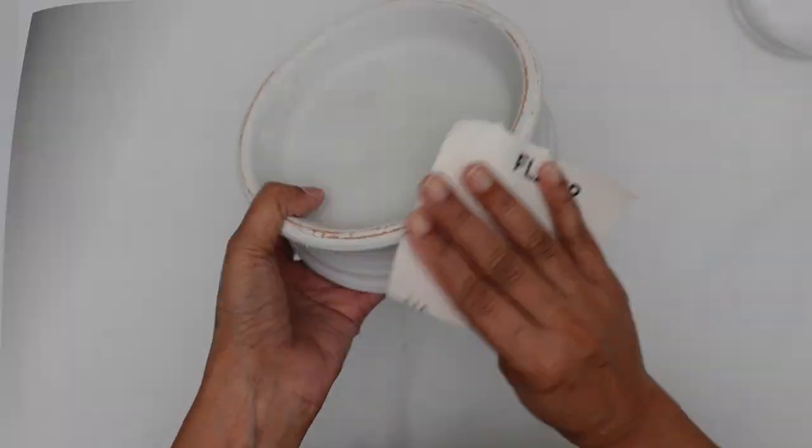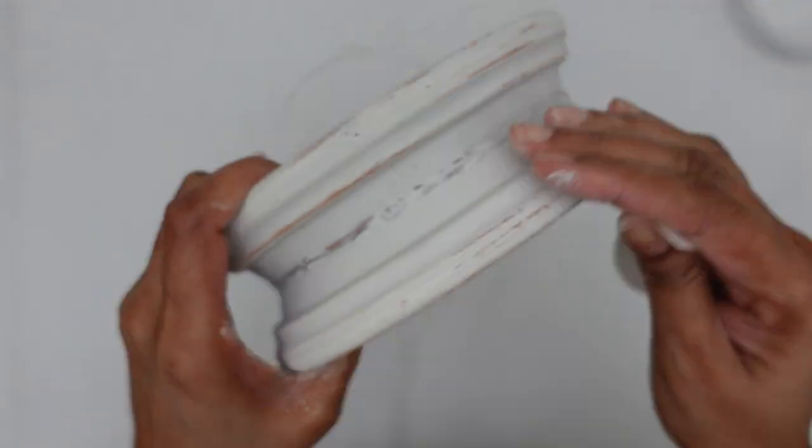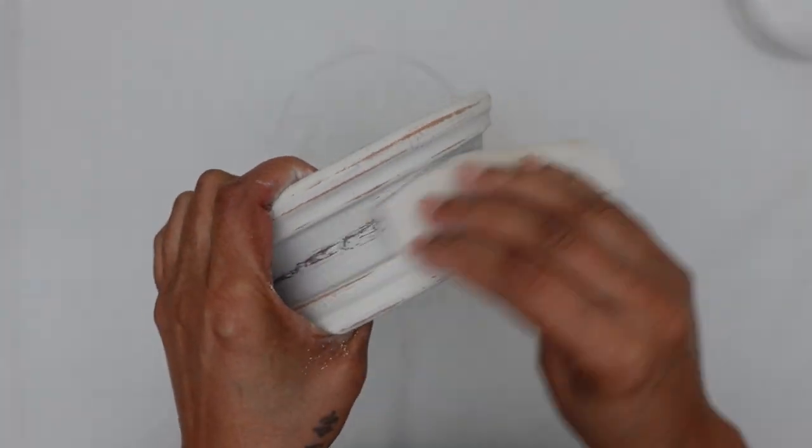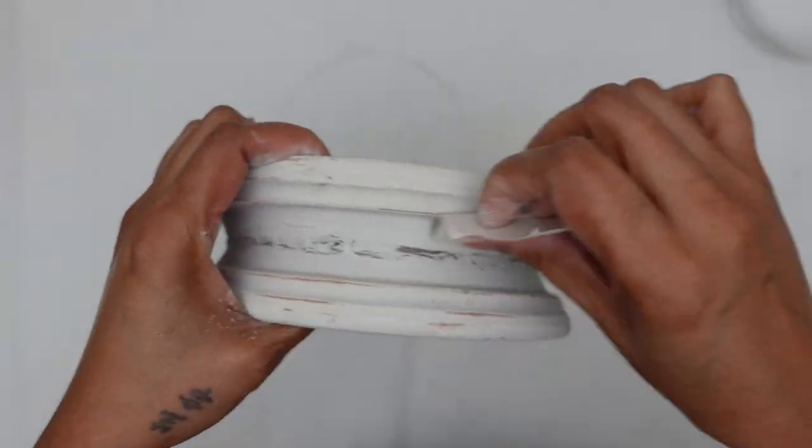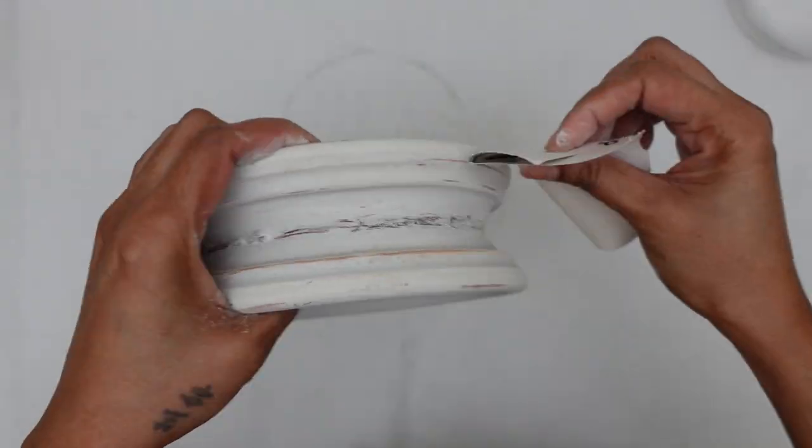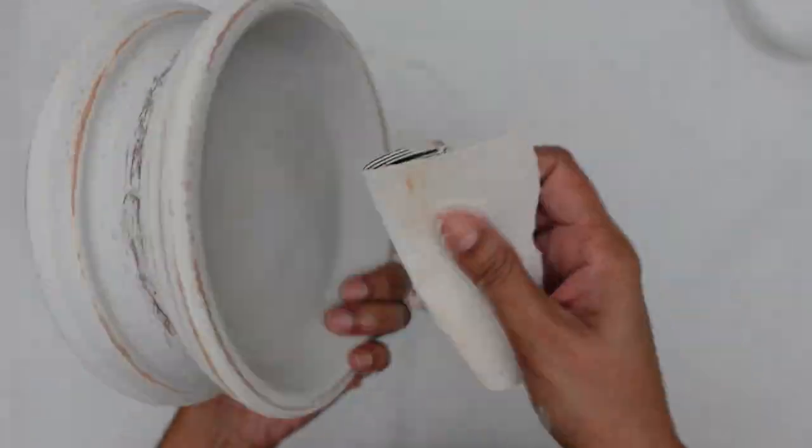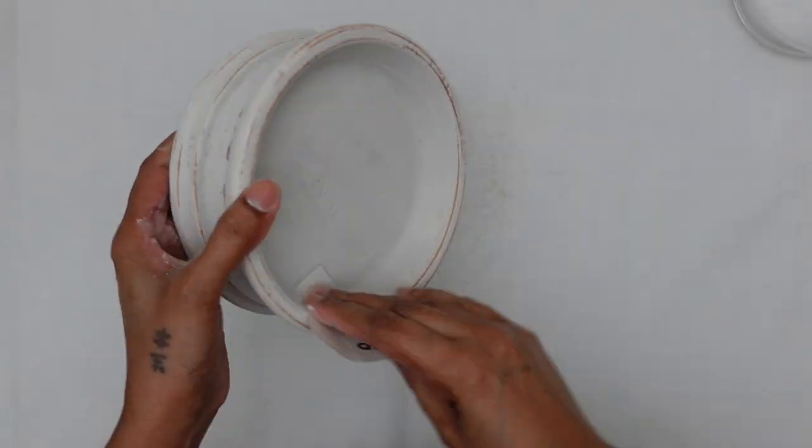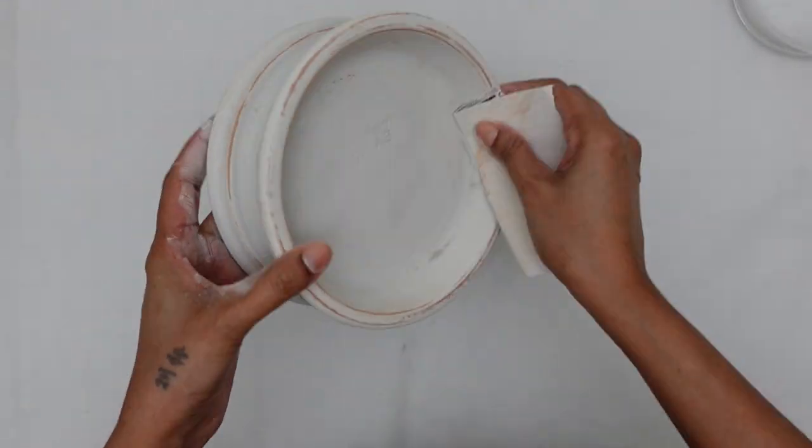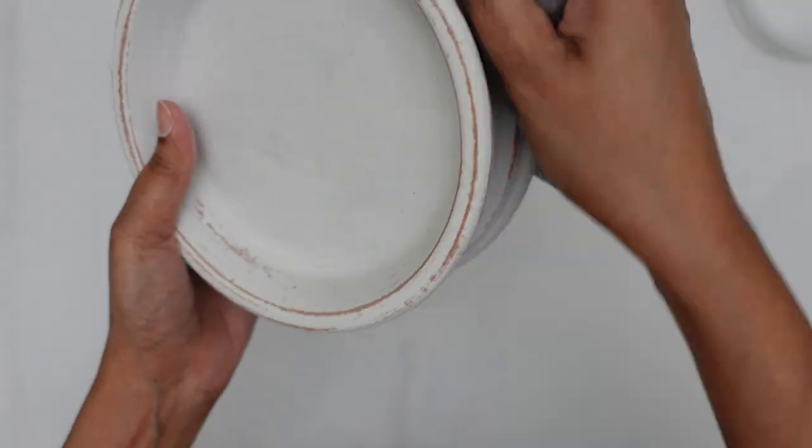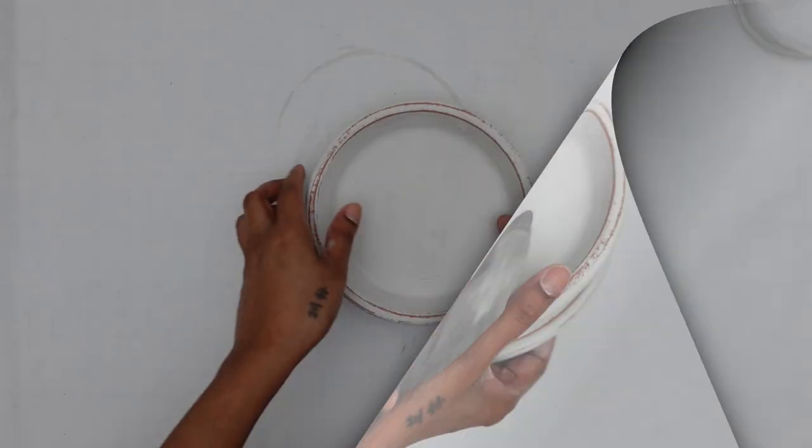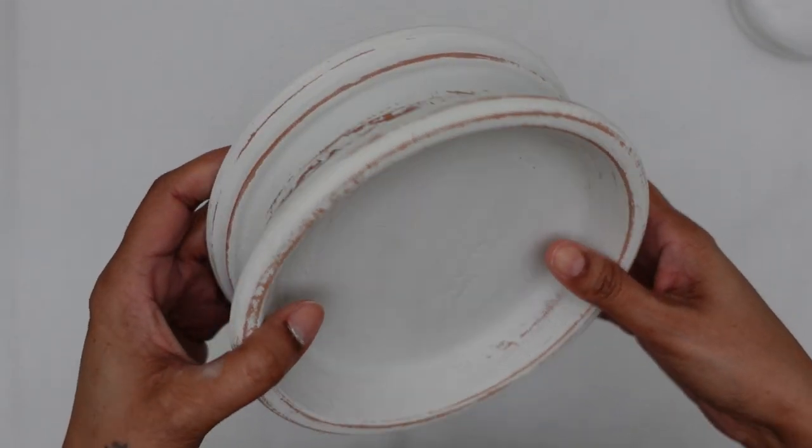Here I'm using a 220 fine grit sandpaper. I roughed it up till I got my desired farmhouse look. You could skip this process if you do not like the rustic look. I wiped it down after sanding. This is how it looks after giving it a roughen up.